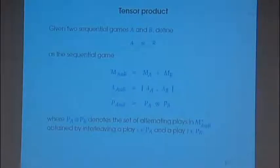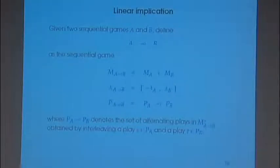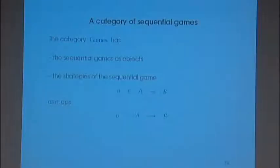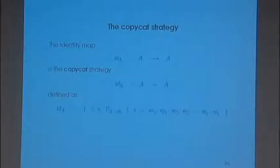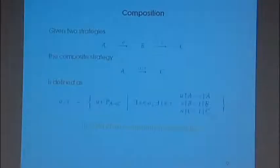We saw how to do a tensor product of two sequential games, then linear implication. We built a category. Remember, it's a graph where the vertices are games and the edges are the strategies. The point of calling that a category instead of just a graph is that we can compose these strategies.